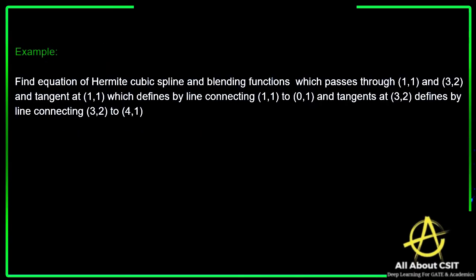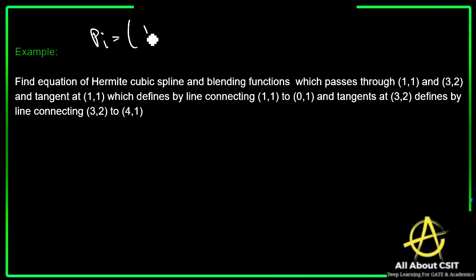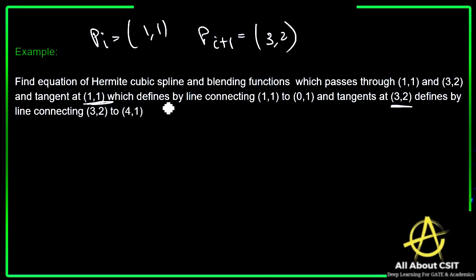Now let's see an example for complete clarity on Hermite curves. Define the equation of the Hermite cubic spline and blending functions. The curve passes through (1,1) and (3,2). The tangent at (1,1) is defined by the line connecting (1,1) to (0,1), and the tangent at (3,2) is defined by a line connecting those points. Let Pi = (1,1) and Pi+1 = (3,2) as our two tangent reference points.